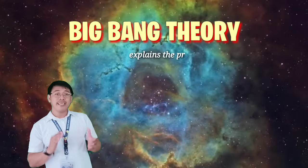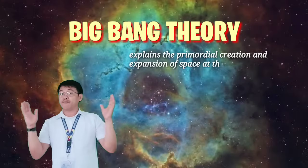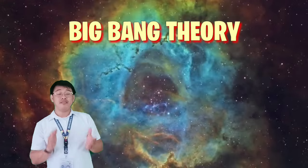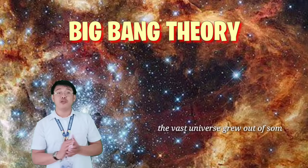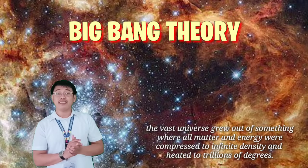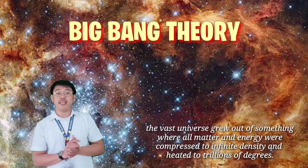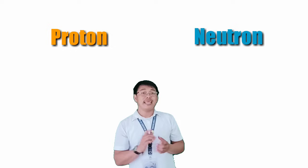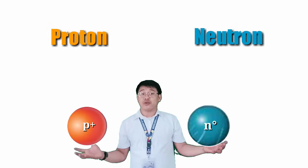Big Bang Theory explains the primordial creation and expansion of space at the beginning of time. This is the most widely accepted theory that the vast universe grew out of something where all matter and energy were compressed to infinite density and heated to trillions of degrees. A fraction of a second after the explosion, the universe was filled with quarks that combined to form protons and neutrons. Moments later, protons and neutrons combined. Matter began to take form.